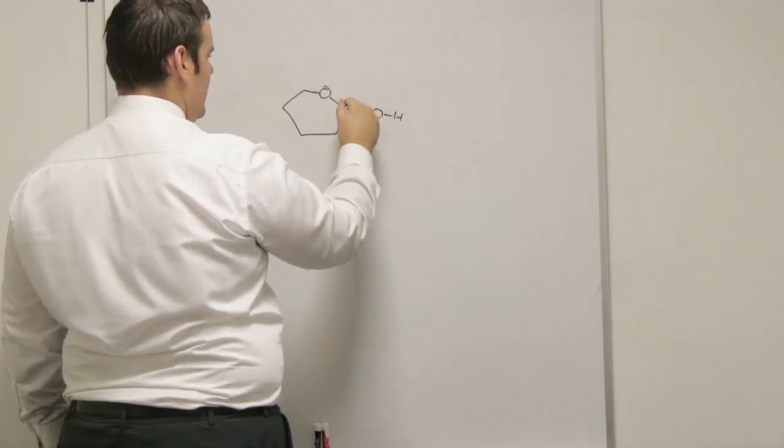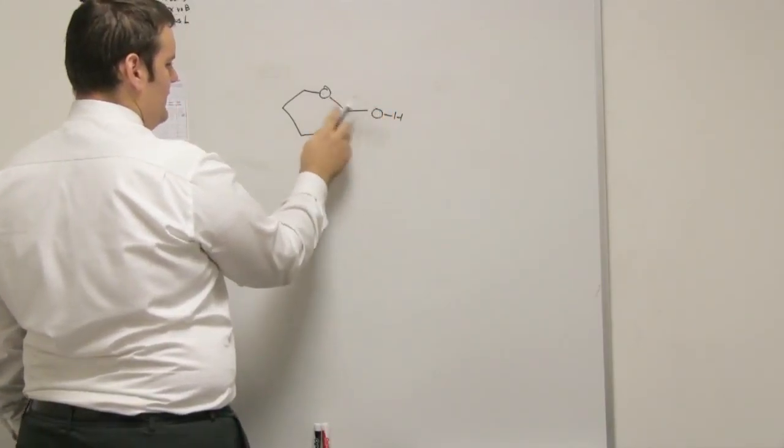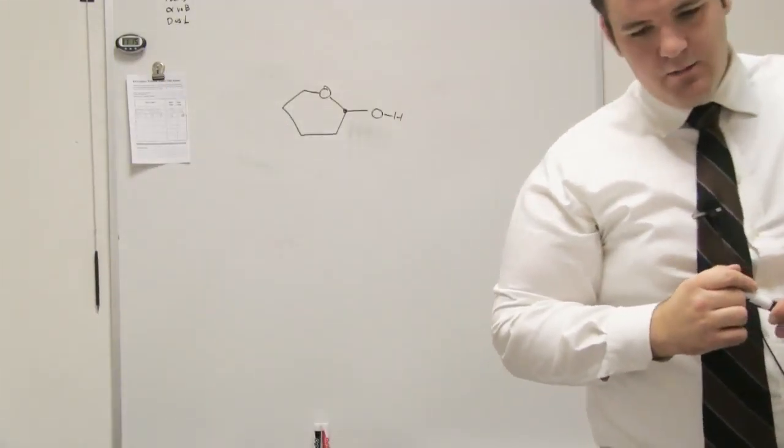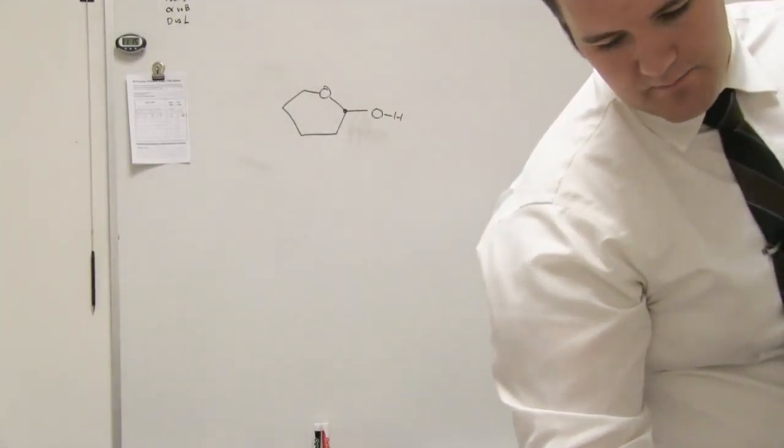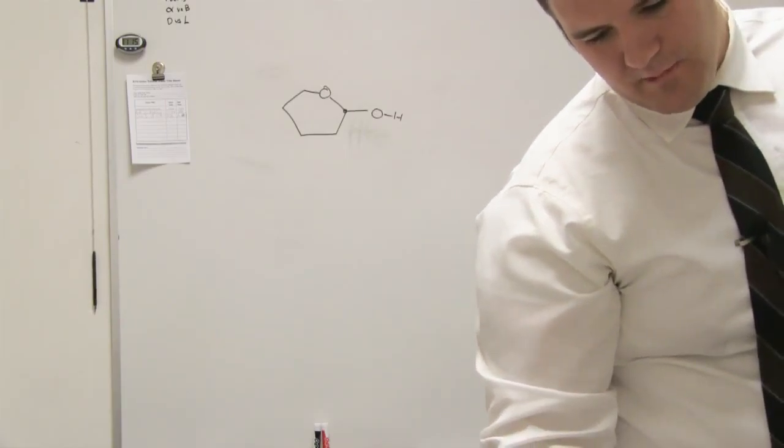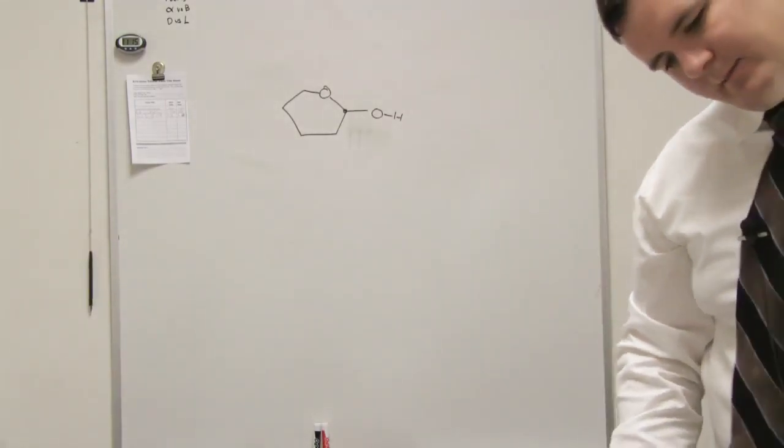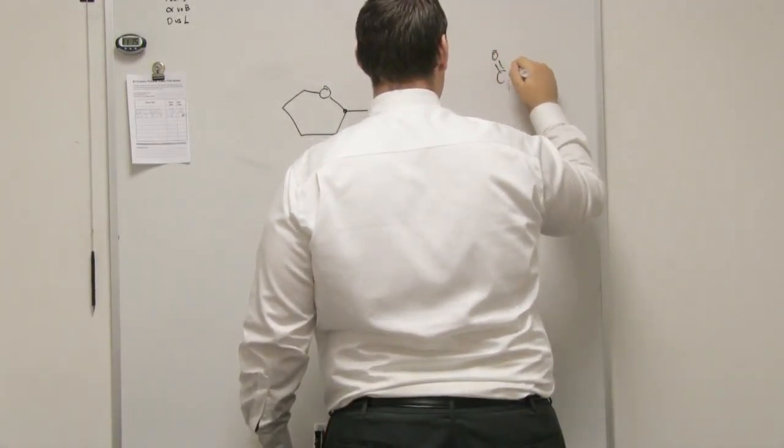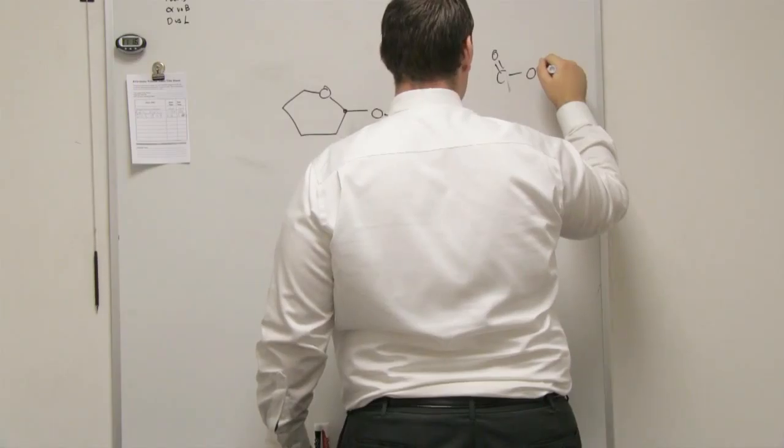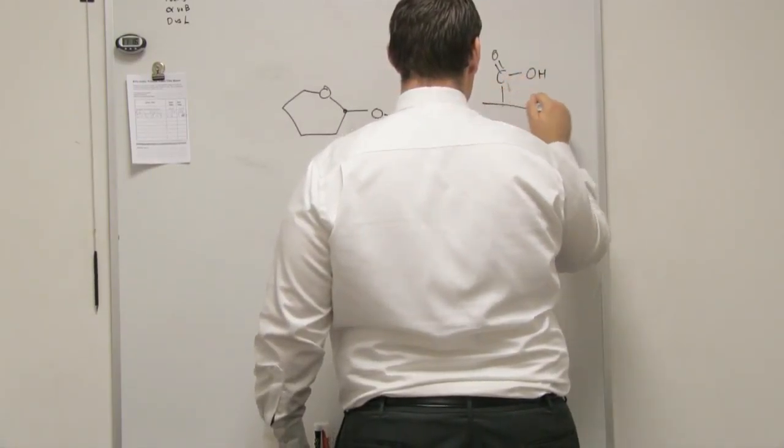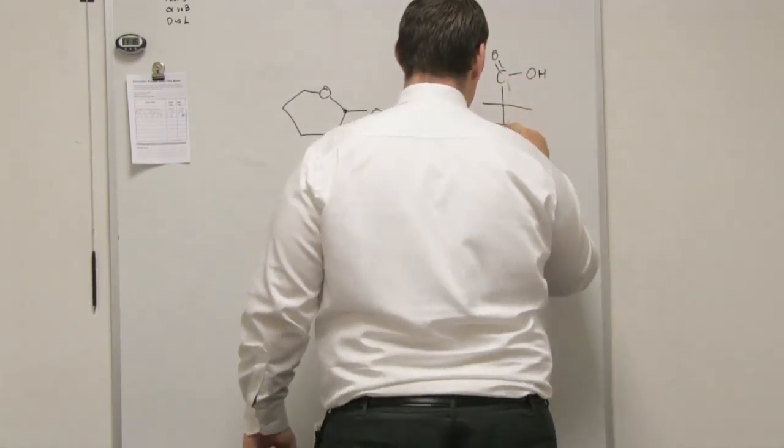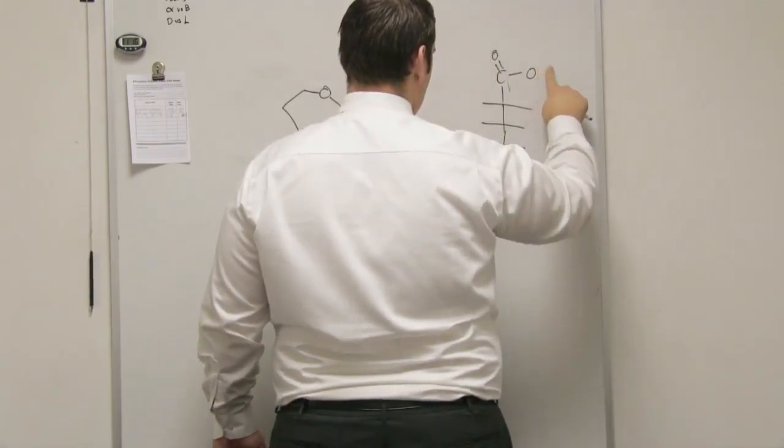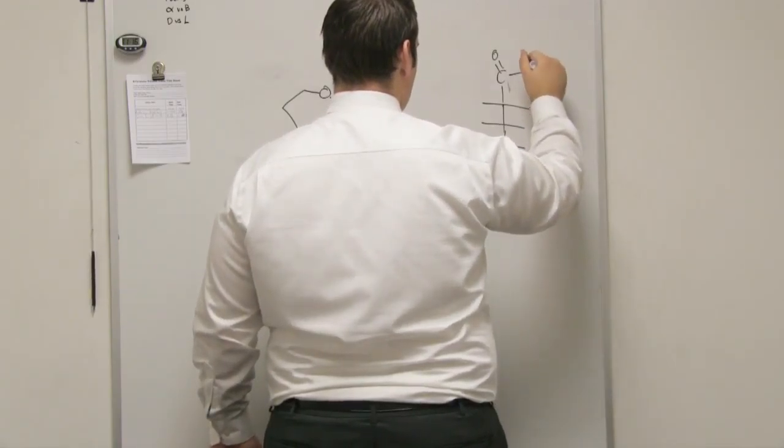So this carbon right here has two oxygens bound to it. So on this, which one would be anomeric? It depends on which one... So okay, let me draw that out. So I have a CHO, which is really... Yeah.